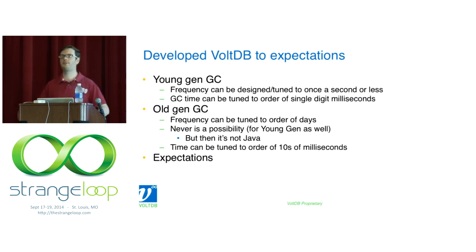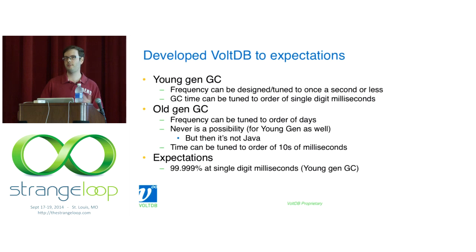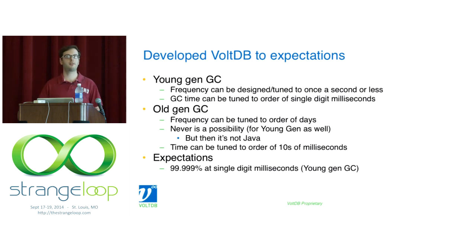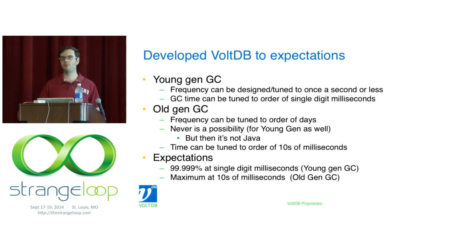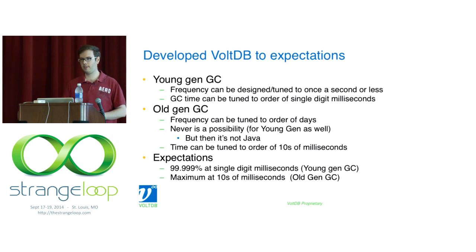With the right software development, at very high percentiles — five nines — we can target single-digit milliseconds, dominated by young-gen GC cost. The maximum worst-case behavior will be dominated by old generation GC, which we can defer to the order of days, though eliminating them entirely is very difficult because there are large tracts of code that can't store data off the heap.